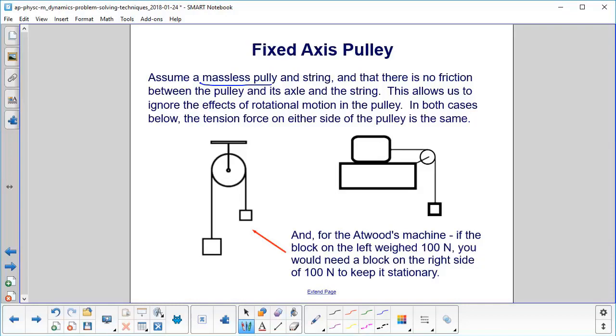For this chapter, we will be assuming a massless pulley and a massless string and that there's no friction between the pulley and its axle or the string. This allows us to ignore the effects of rotational motion in the pulley. We're not going to worry about the pulley, it's just changing the direction of the force. So in both of these cases the tension on either side of the pulley is the same. For example, if the block on the left is 100 newtons you would need a block of 100 newtons on this side to keep it stationary.